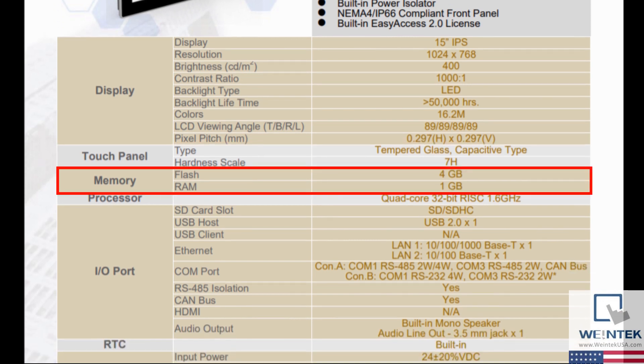In the memory section, our specifications list that the RAM or random access memory and flash memory has one gigabyte of RAM and four gigabytes respectively. Unlike a typical hard drive, flash memory has no moving parts and is non-volatile, meaning that the information stored within memory will be saved even if you power down the device.